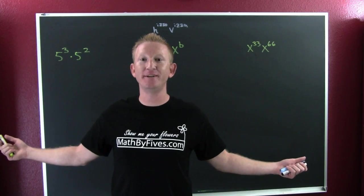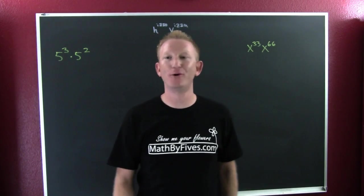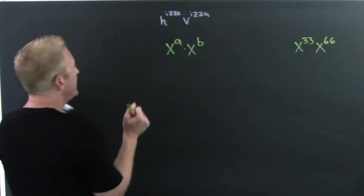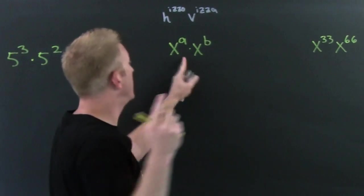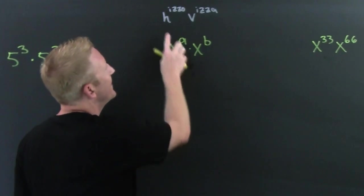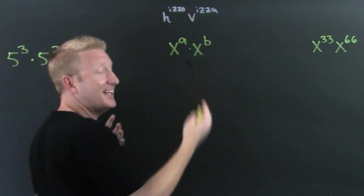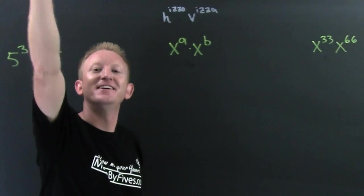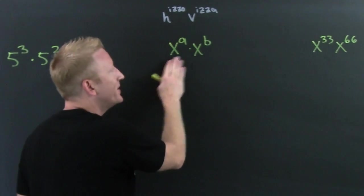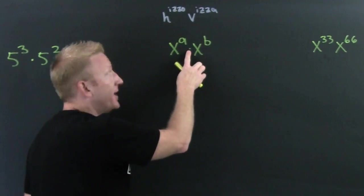The power rule for exponents - oh boy, ready? I want to know what to do in this scenario. Get your hands up because you're answering the question: what do you do here when you have the same base and you're multiplying?